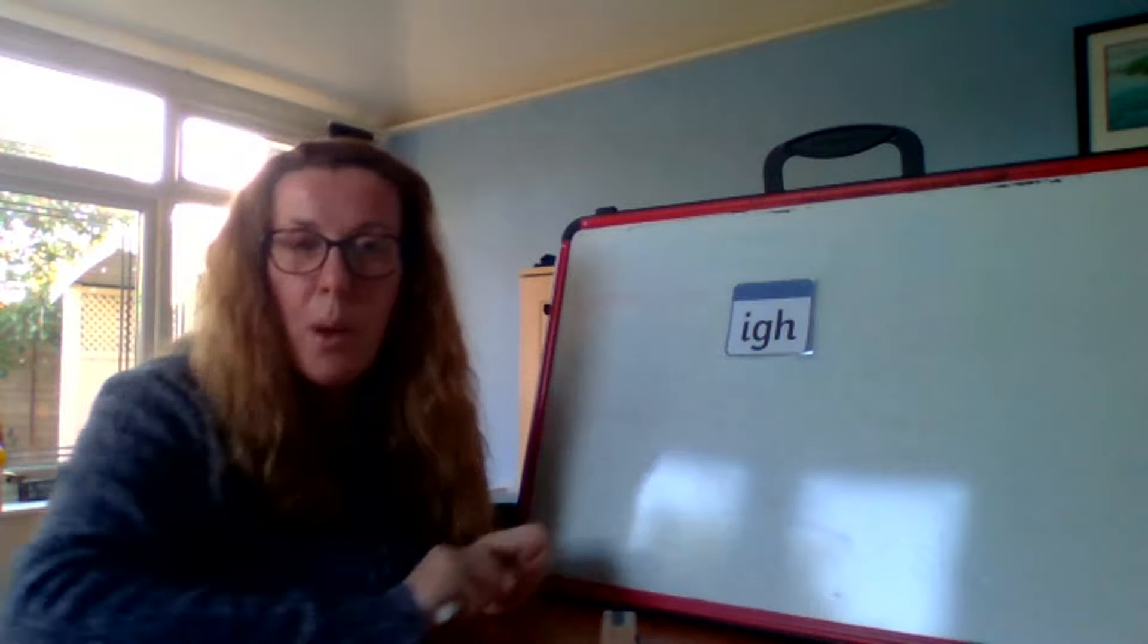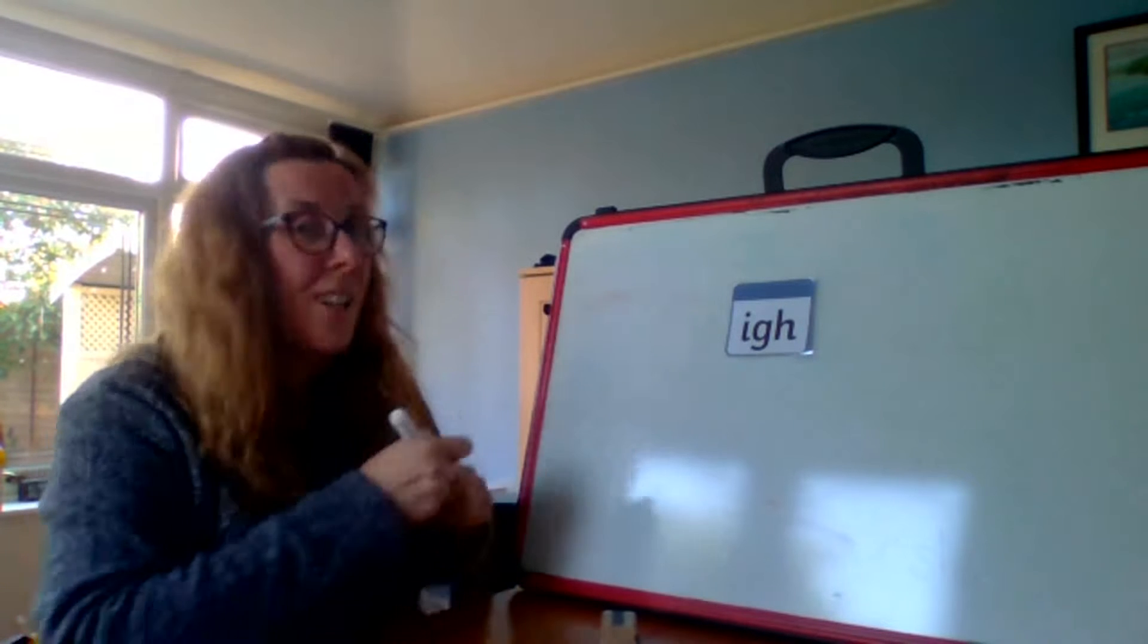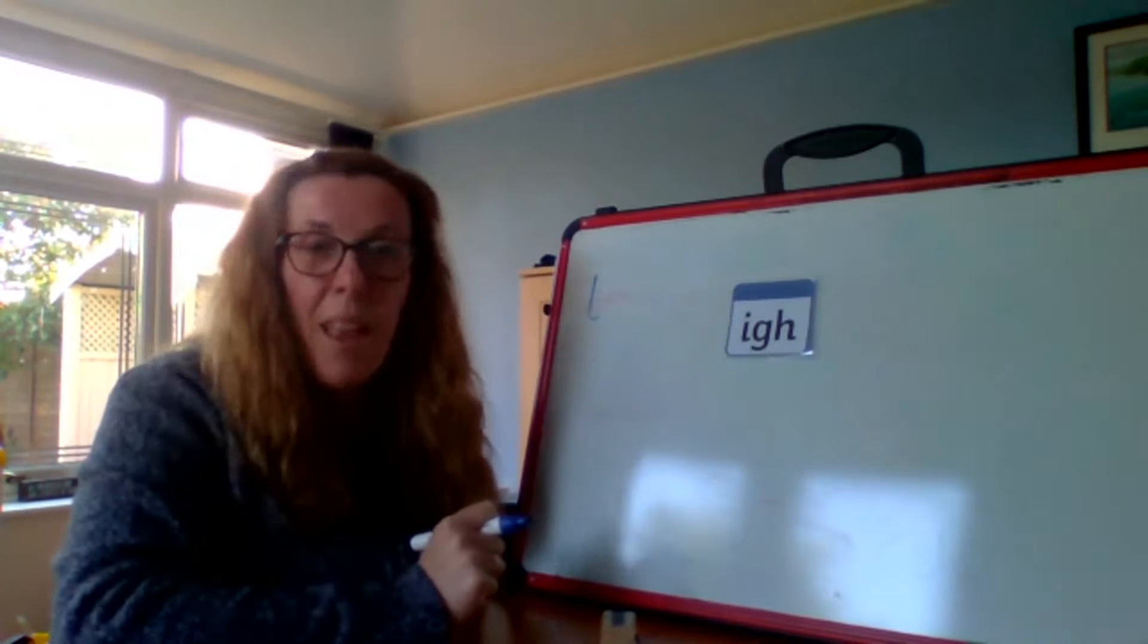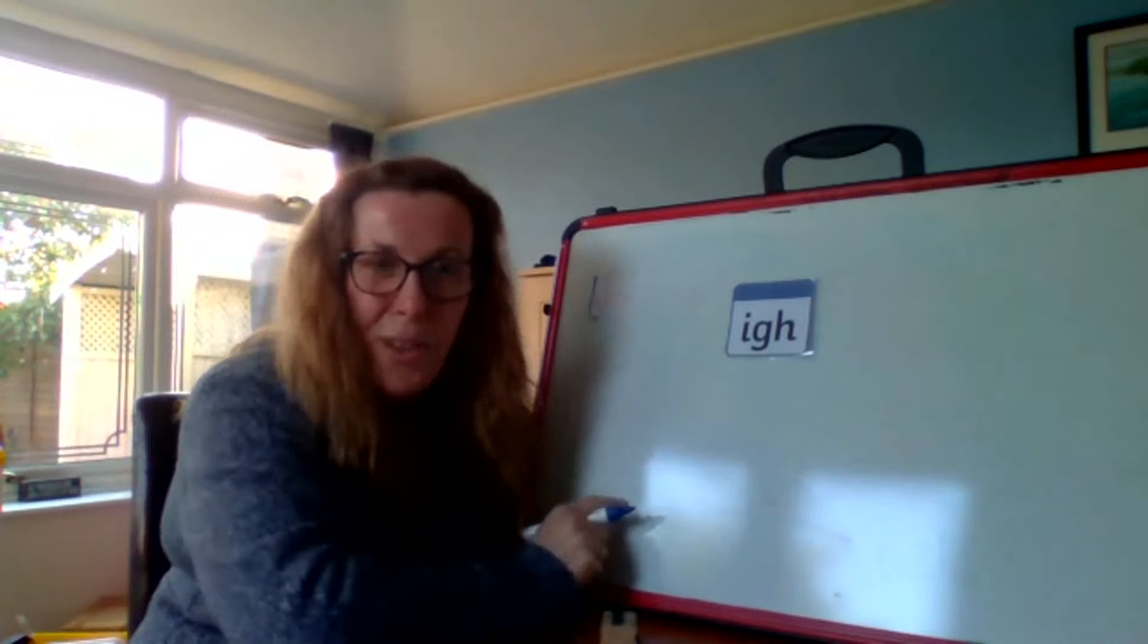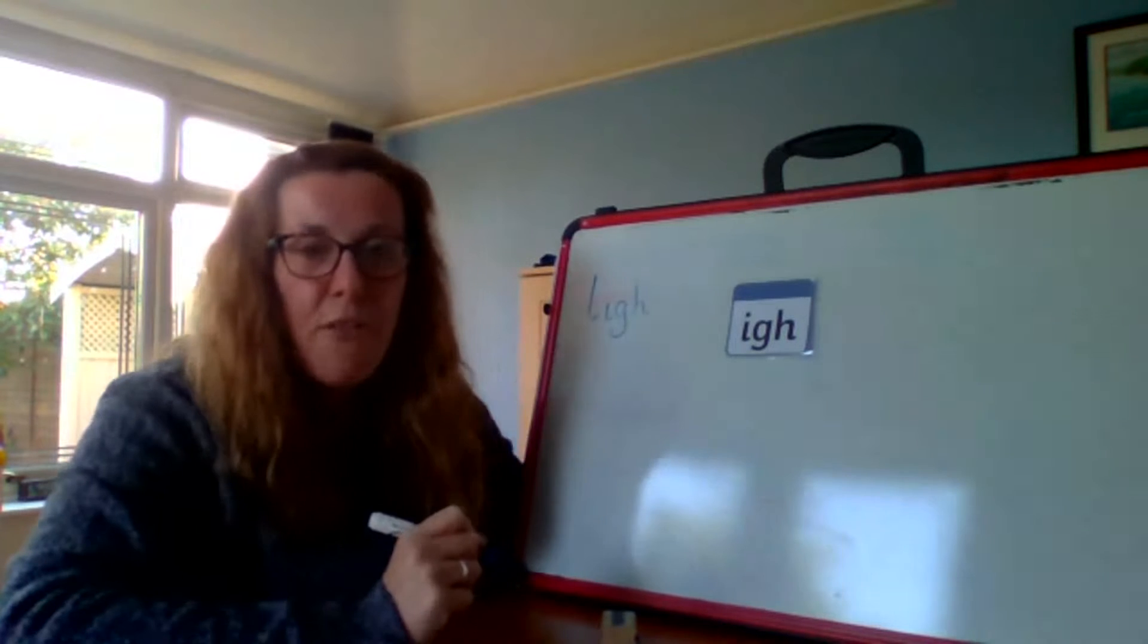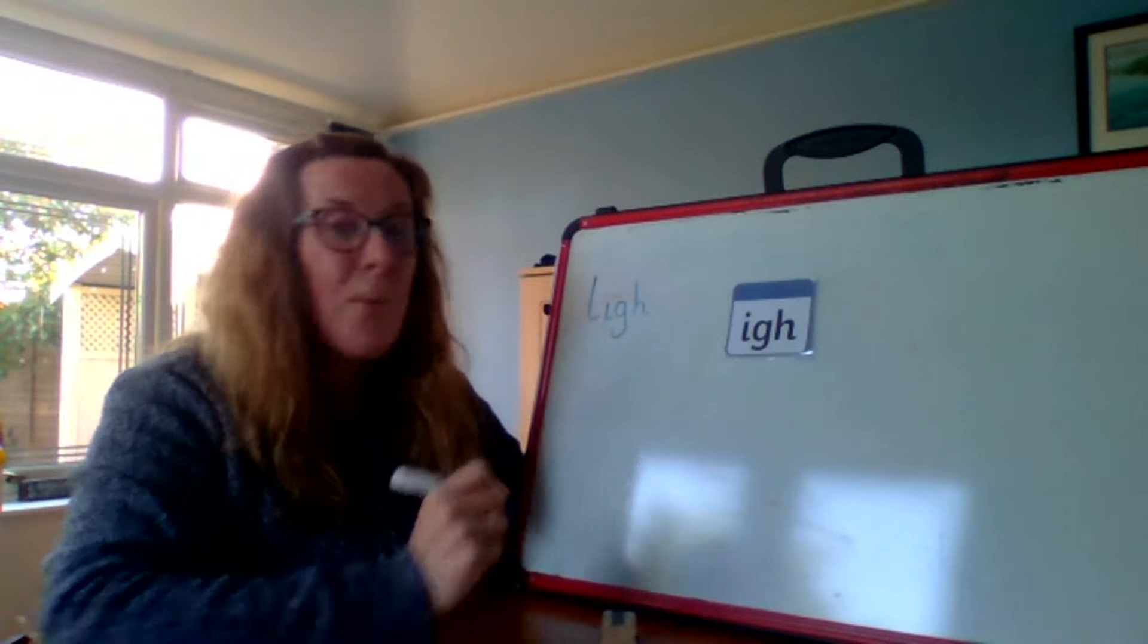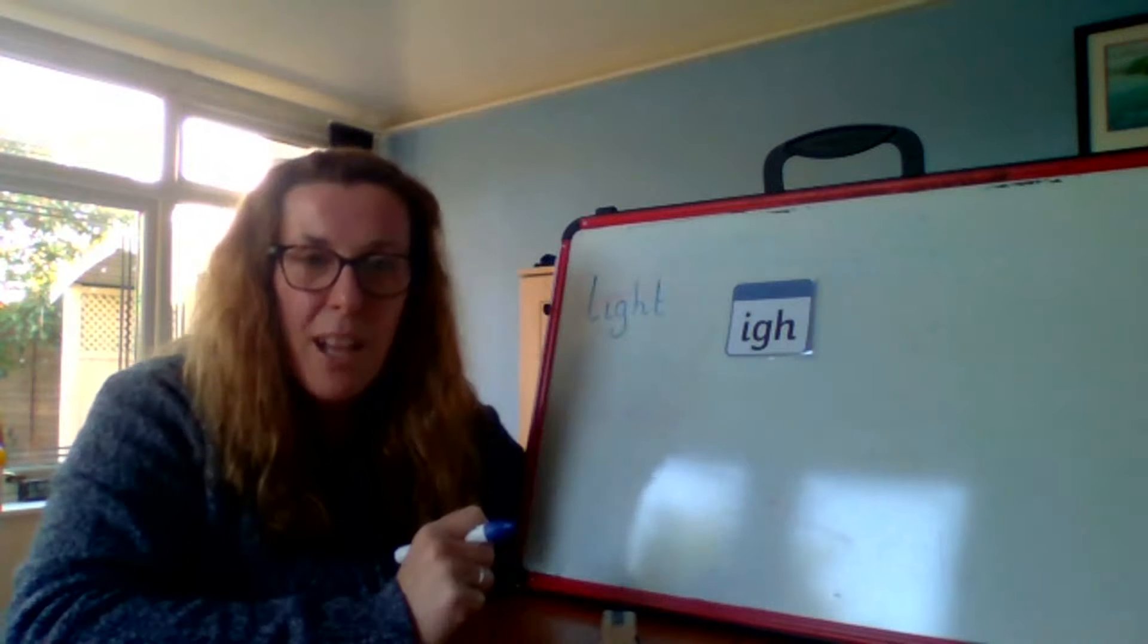Can you help me write it? What's that first phoneme? What's that first phoneme? Well done. L. So we're going to write L. I. Well done. I is the next one. And we've got it right here for us to use. So I. And what's that final phoneme? T. Well done, Robins. Well done. Light. Fantastic.